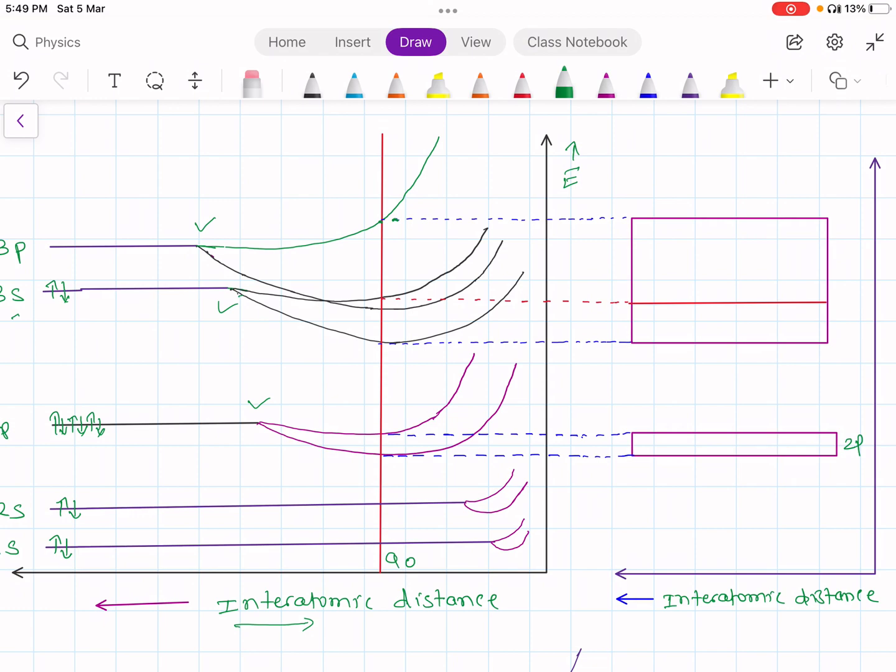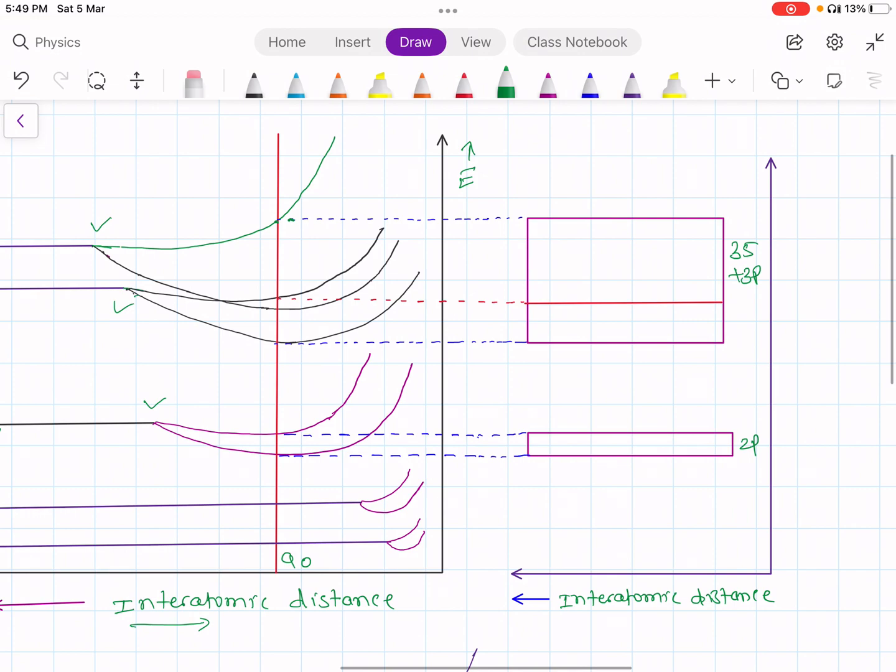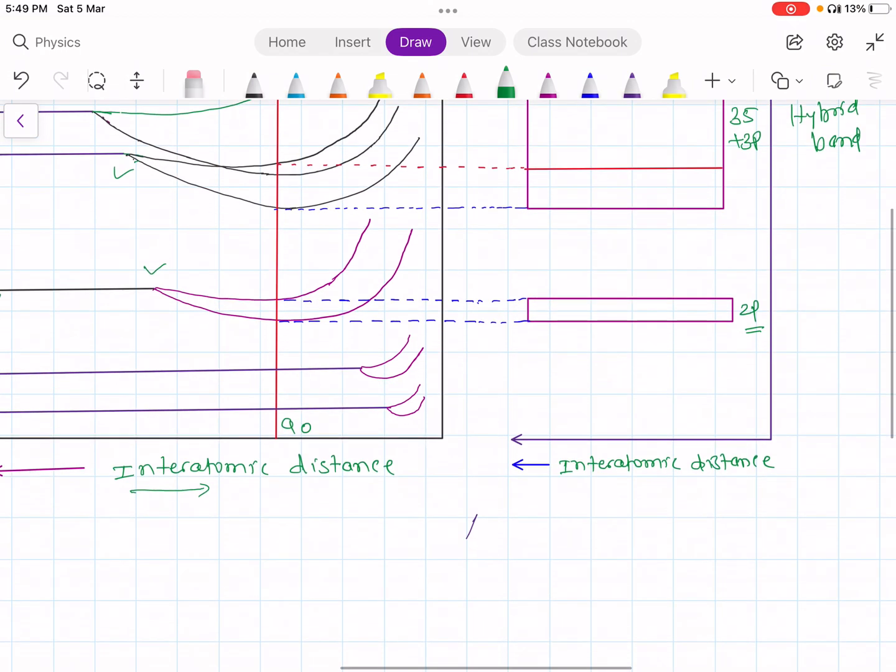And this one is a combination of 3s plus 3p. So we got here the composite band or we can say it is hybrid band. And this band is 2p band.